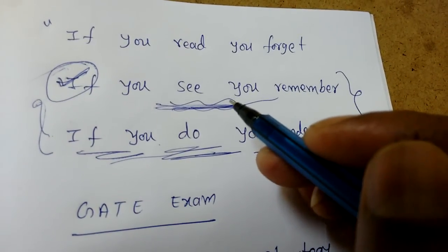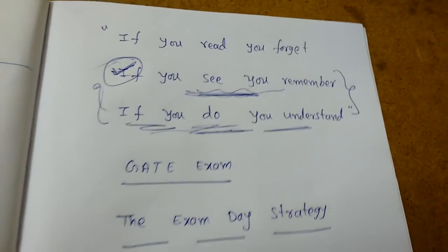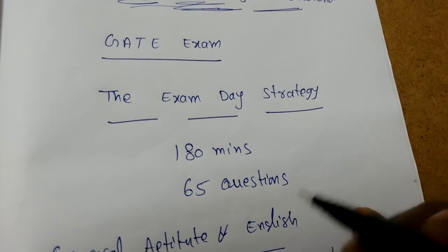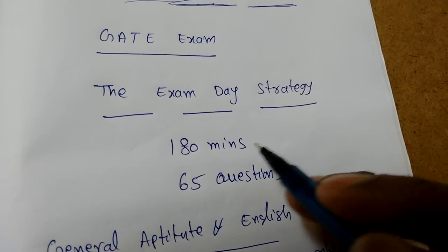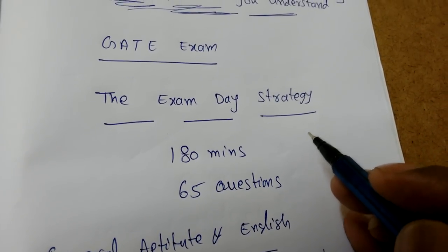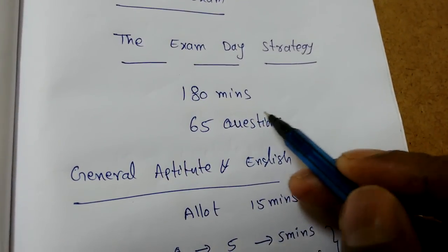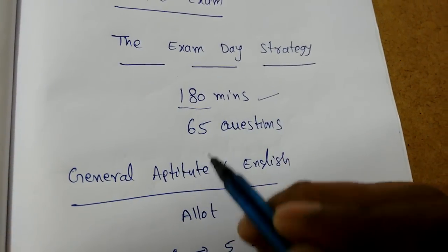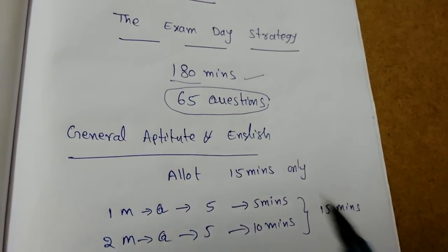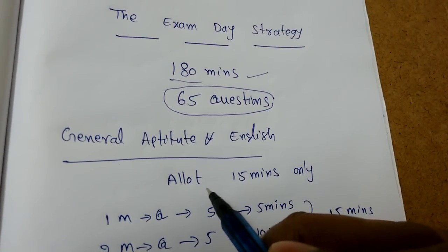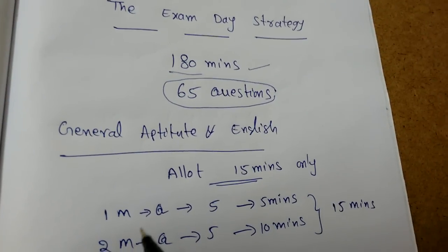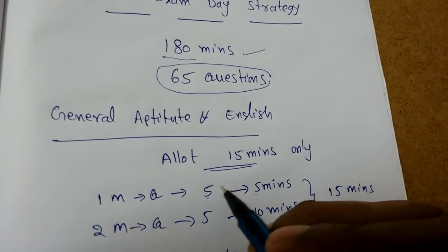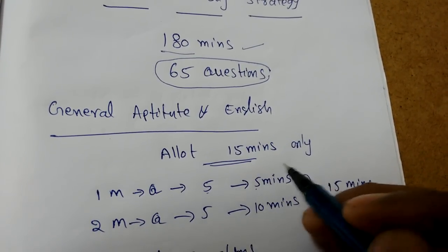If you just see the formulas, you will get so many marks in each subject. Now, the GATE exam day strategy - this is not a unique strategy you must follow, but it has been discussed with experts. We have 180 minutes, that is three hours, to solve 65 questions. For general aptitude and English, allot only 15 minutes, because it contains five one-mark and five two-mark questions.